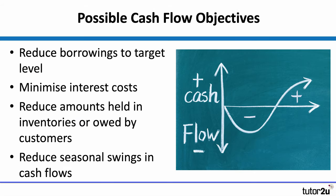Beyond revenues, costs, and profits, there are also other financial objectives. An important one for any business is to remain solvent and continue to trade, so it's important to set objectives in relation to cash flow. This doesn't always mean targeting a positive cash flow at all times, but ensuring cash flow stays within an acceptable range. Setting cash flow objectives also helps with decisions such as how much inventory to hold or how long to allow customers to pay their bills.